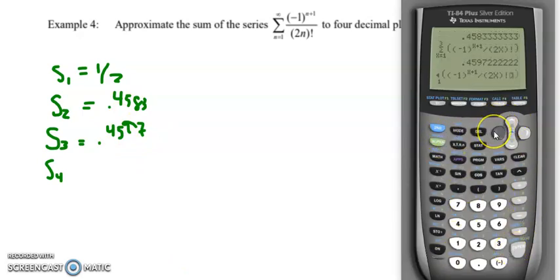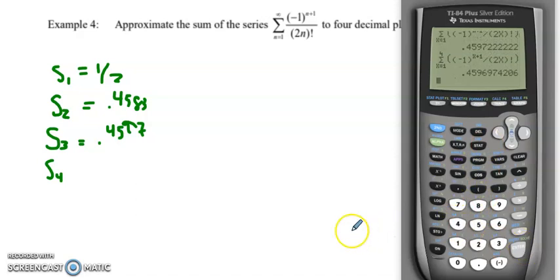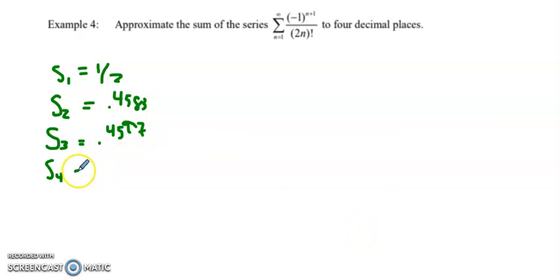Let's go and add the first four terms this time. And now I've got 0.4596. Still only the first two decimal places repeating, but actually now I have three decimal places repeating. I'm up to 0.459.